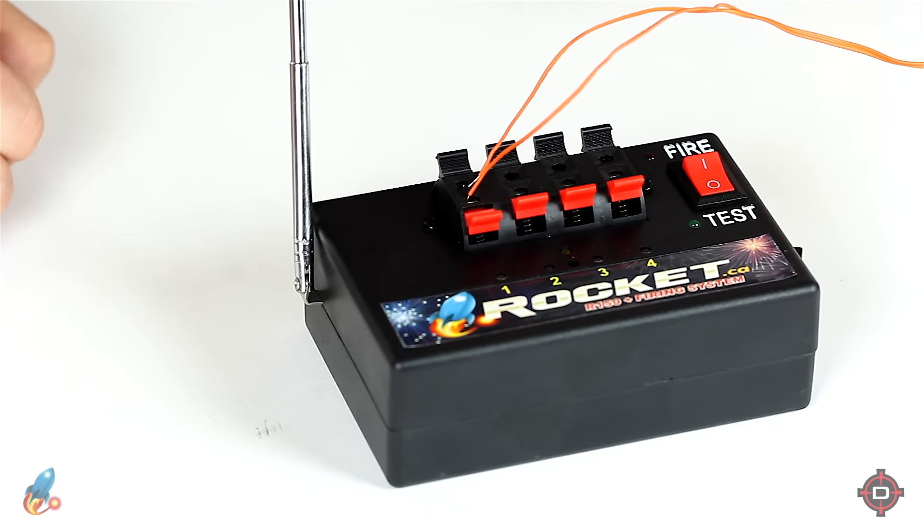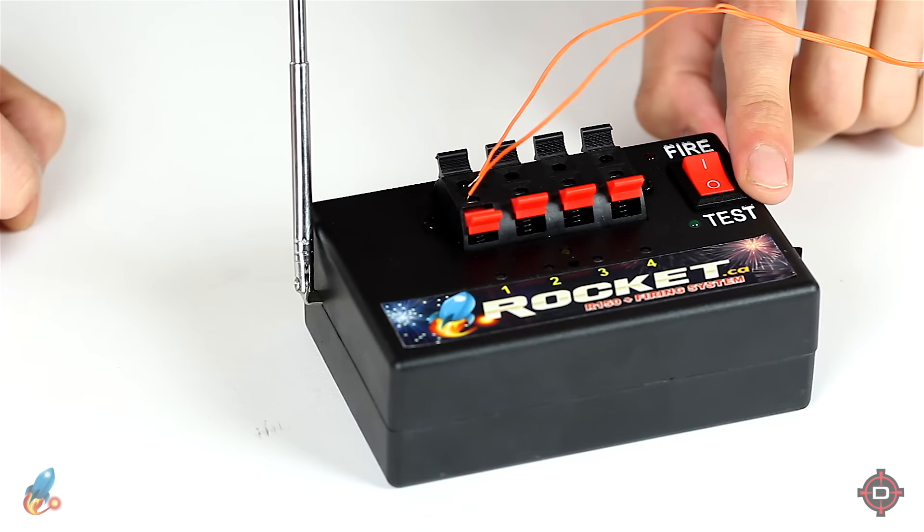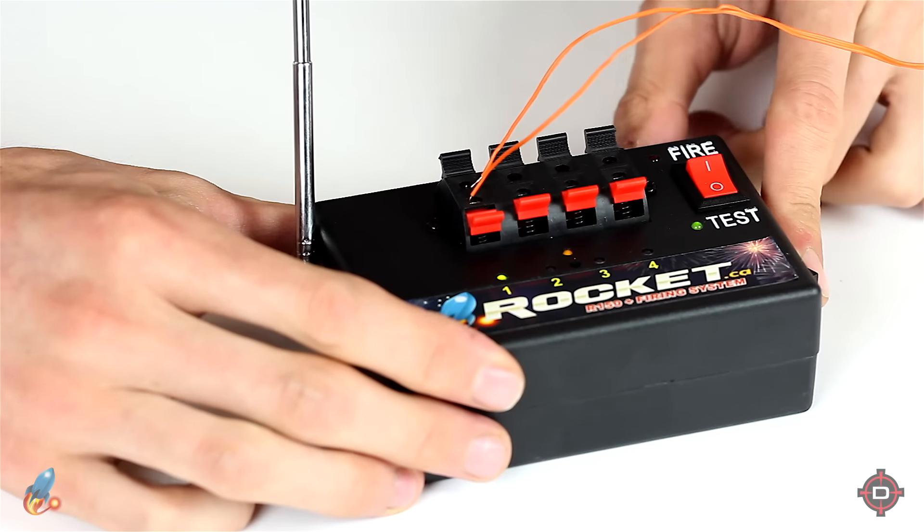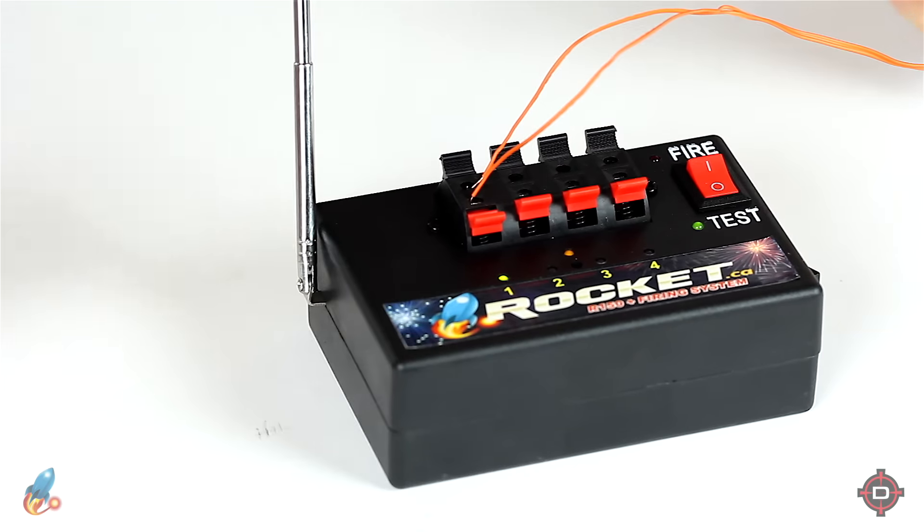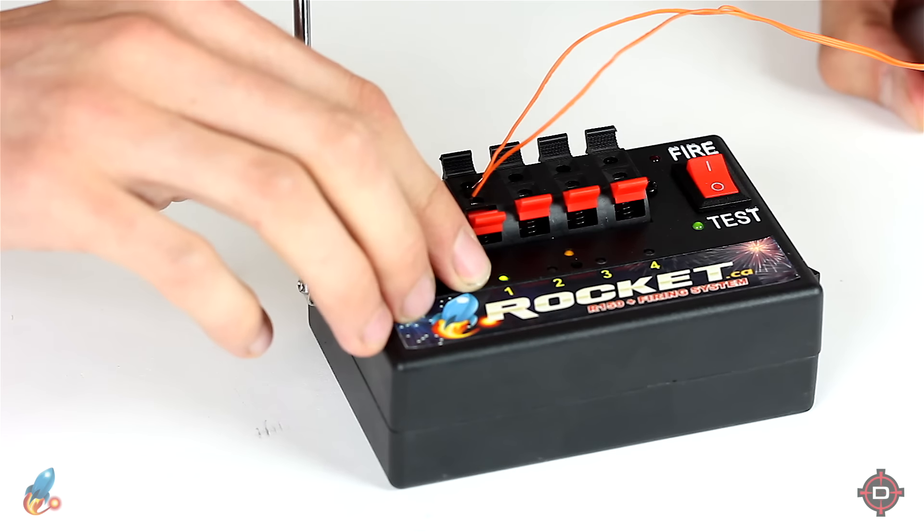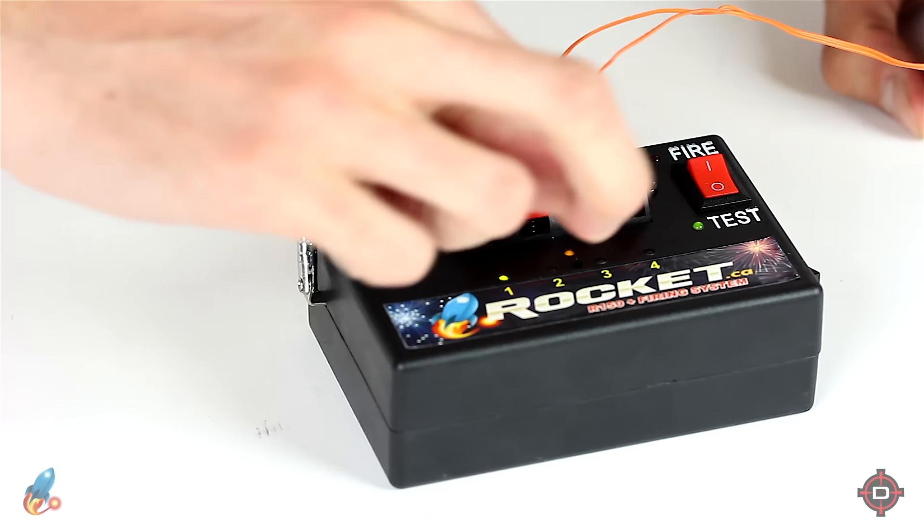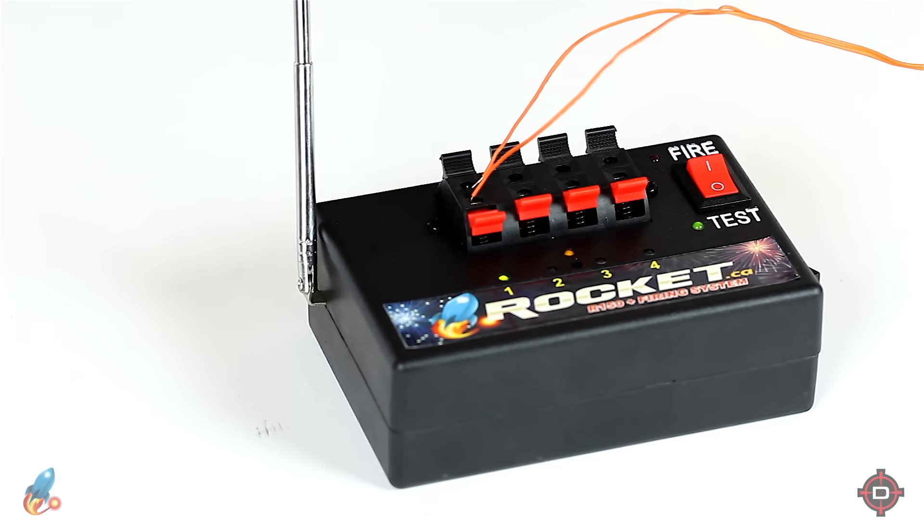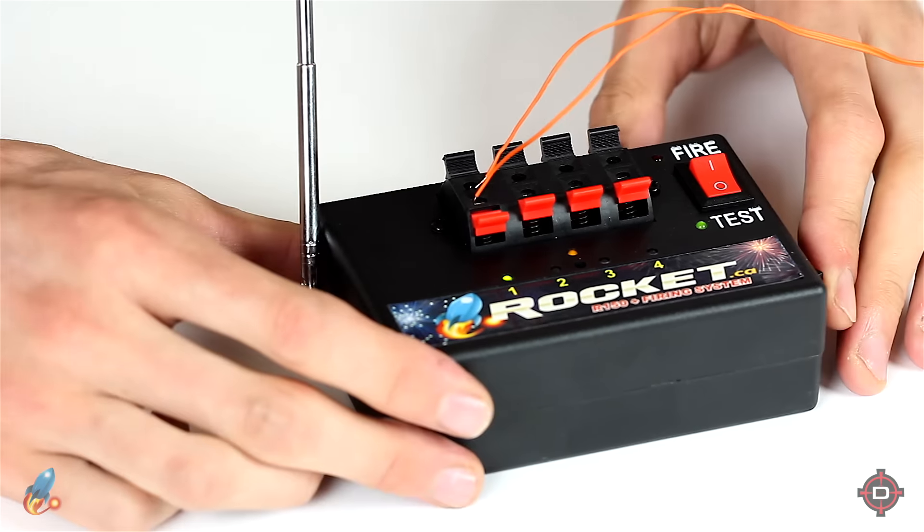Now, once it's hooked up, you can actually test it to make sure if it is in fact hooked up right. You want to make sure the switch on the top is on test mode, not fire mode, and then turn the power switch on the side and then it's going to light up. Any cues that are successfully and properly hooked up are going to have a little green light under them. And if they're not, then the light will be out just like the other three cues. So as you can see, we have hooked up Q1 properly and we just turn off the unit again.